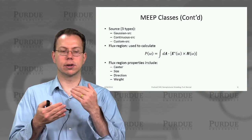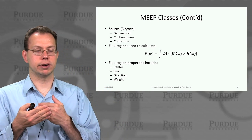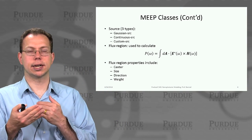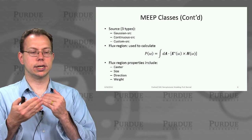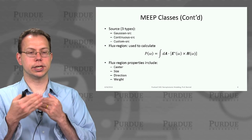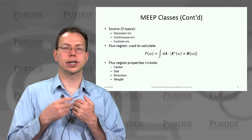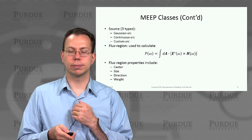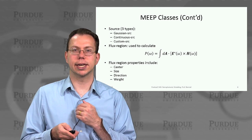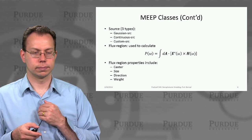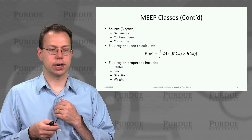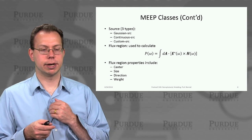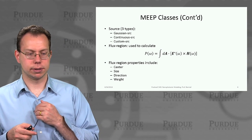You can also create flux regions, which help you monitor the output of the sources. This relates to calculating absorption and losses in different geometric regions — you can break up different regions and perform transformation of surface integrals into volume integrals to estimate absorption in different areas. You have to correctly set up flux planes based on their position, orientation, and weighting, and you can add multiple flux planes together to get a single answer. In the next lecture, we'll talk in more detail about how to use MEEP.